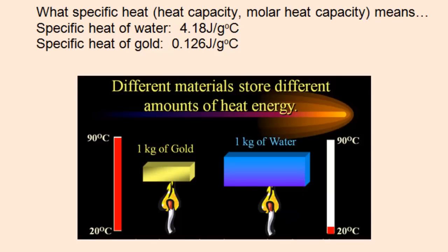Given equal amounts of each substance, 1 kilogram of gold and 1 kilogram of water, and we'll assume equal amounts of heat are delivered to each substance, we can see the large temperature change in gold because very little heat is needed per gram of gold to change the temperature.